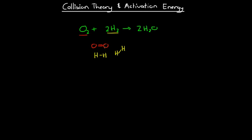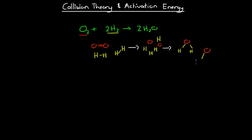A reaction occurs when reactive particles collide with one another, and through that collision their bonds break and they form new bonds as part of new molecules. So we've got these three molecules — they all collide, their bonds break. We have two oxygen atoms and four hydrogen atoms because all the bonds in the three molecules we started with have broken. Then we get new bonds forming, and we get two water molecules forming. That is what happens when a reaction occurs.